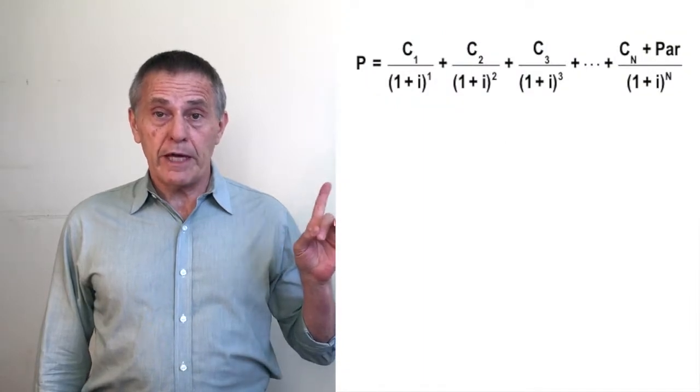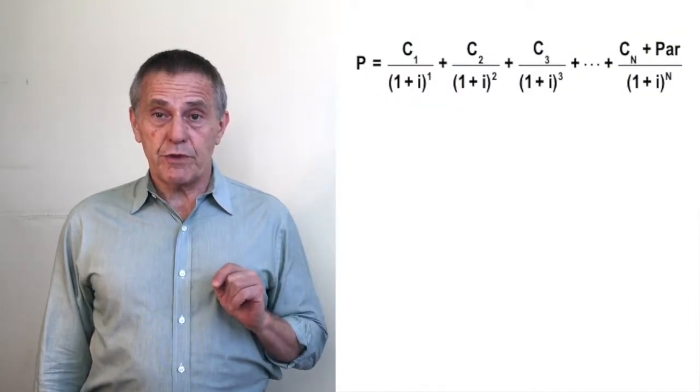So how does one price a bond? Well, as indicated before, it's a relatively straightforward process as long as one knows the bond's yield to maturity. A bond's price is the present value of its future contractual cash flows discounted by the yield to maturity expressed as a periodic rate.